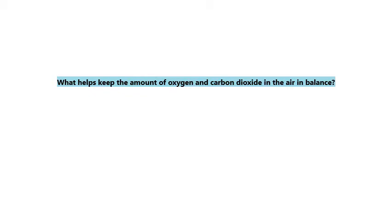Living things take oxygen and release carbon dioxide into the air. By the process of photosynthesis, the green plants take carbon dioxide and release oxygen into the air. But what helps keep the amount of oxygen and carbon dioxide in the air in balance? As we said, in nature, everything must be in balance — the carbon dioxide amount and also the oxygen amount.